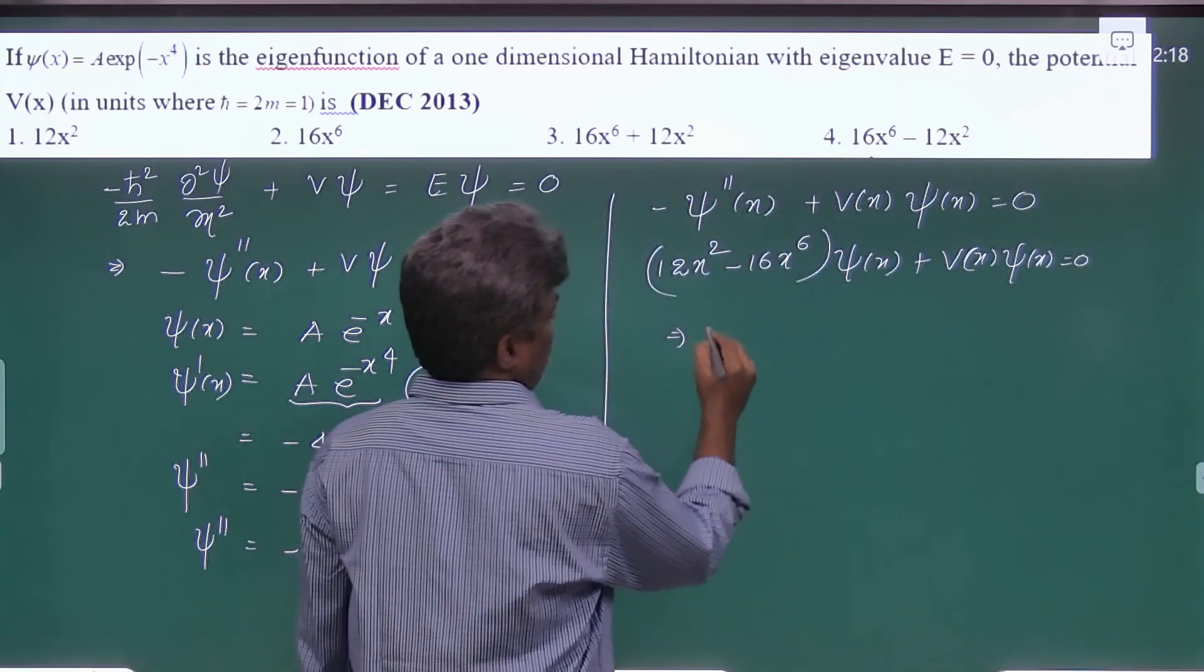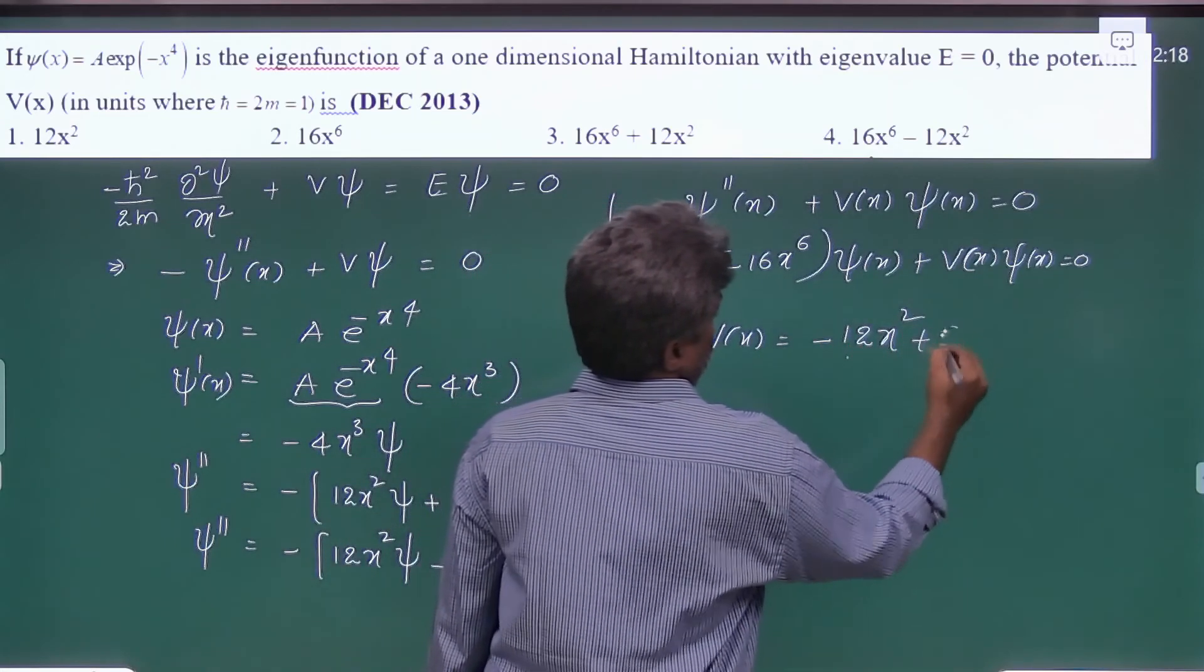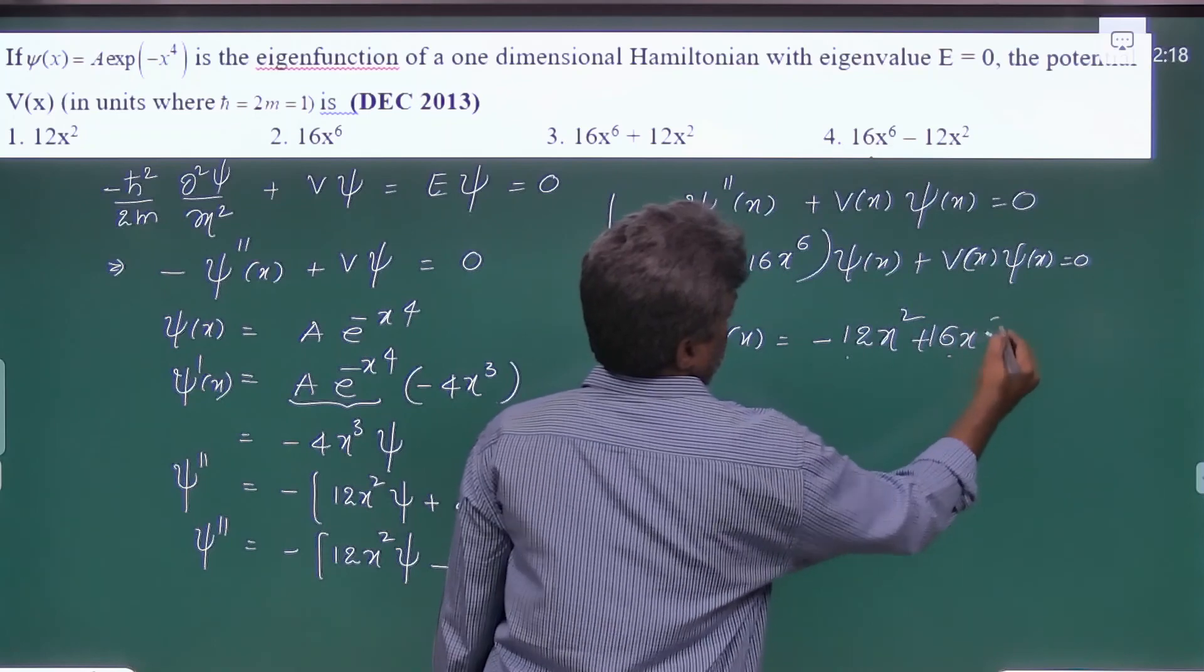From this we can write V(x) = -12x² + 16x⁶.